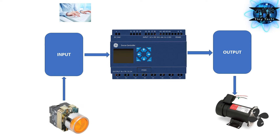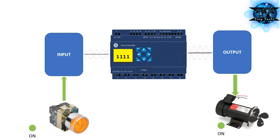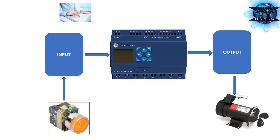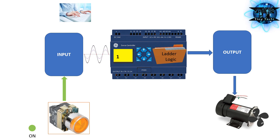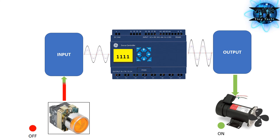Now, when the button is pressed, an electrical signal is sent to the PLC. The input passes this signal to the CPU. The CPU processes the received data and sends the result to the output. The output converts the data back to a raw electrical signal, which it applies to the motor, turning it on. Pressing the button again repeats the process and turns the motor off.